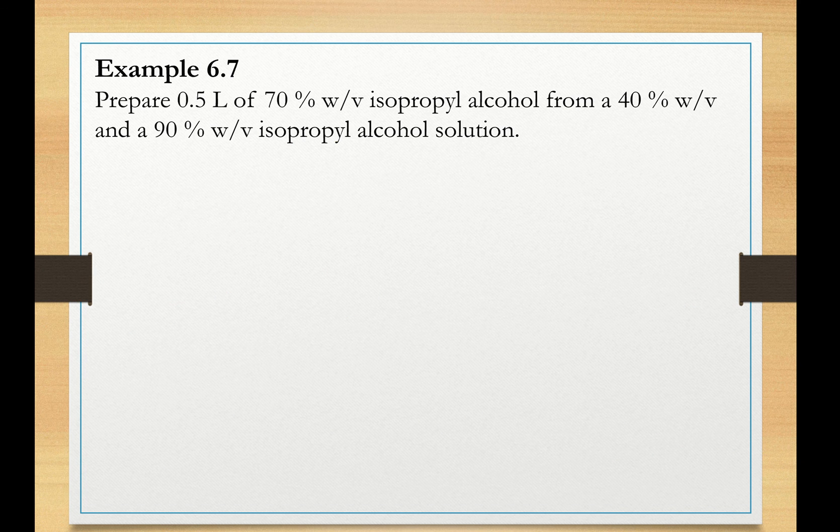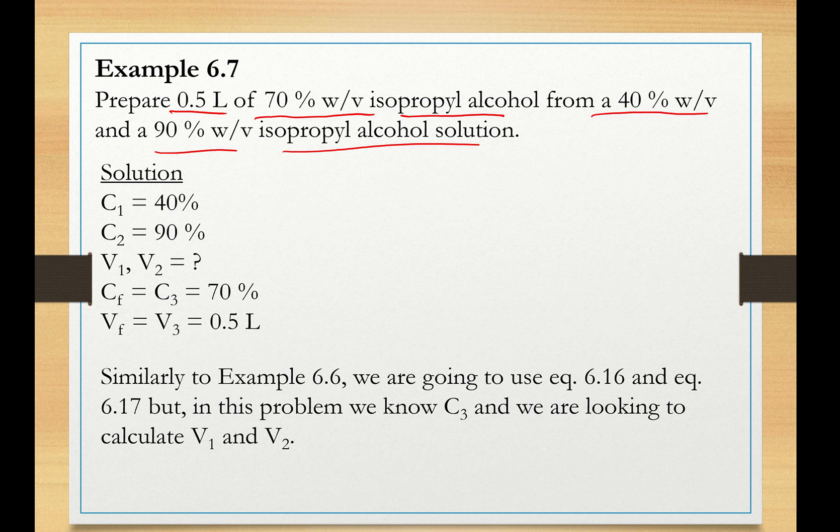Now, let us take a look at example 6.7. Prepare 0.5 liters of 70% w/v isopropyl alcohol from a 40% w/v and a 90% w/v IPA solution. So again, to the left, we write our concentrations. We are mixing a 40% and a 90%. We don't know the volumes, but we know the final volume, that is half a liter. And we know the concentration of the resultant mixture, that is 70%.